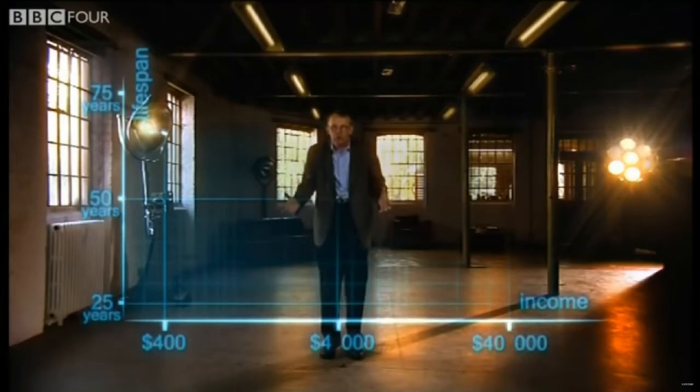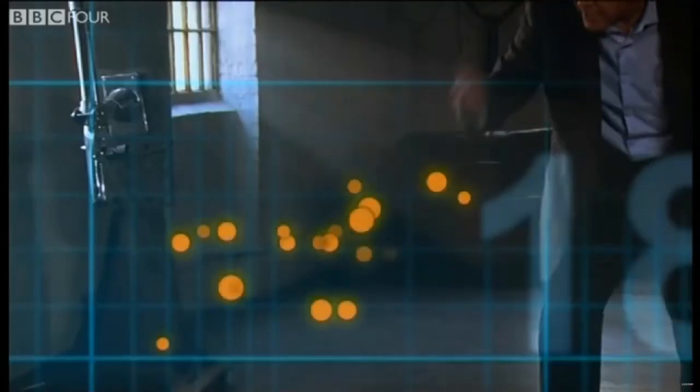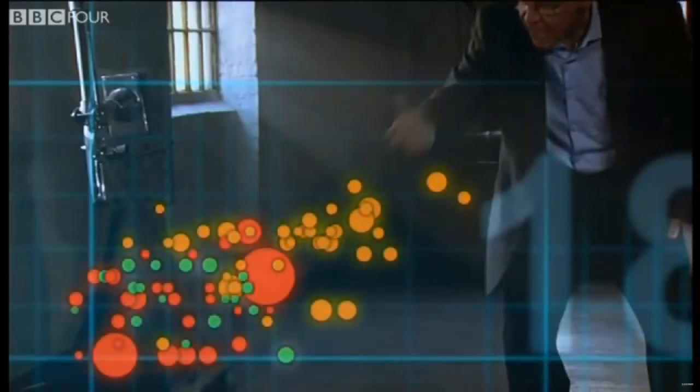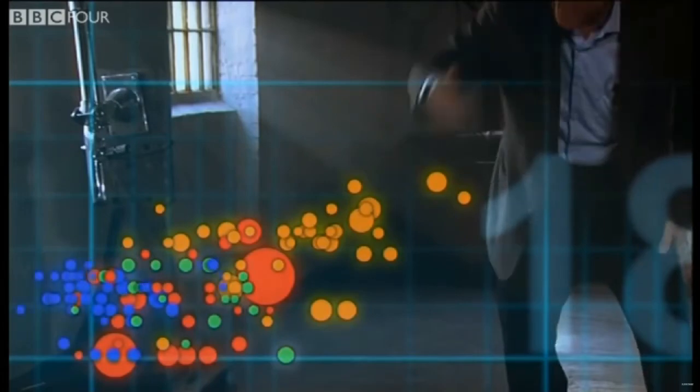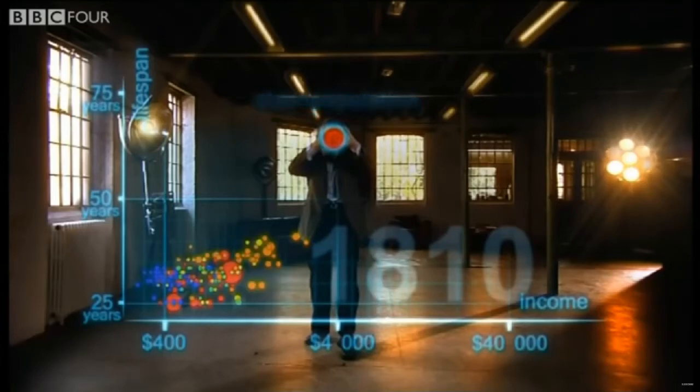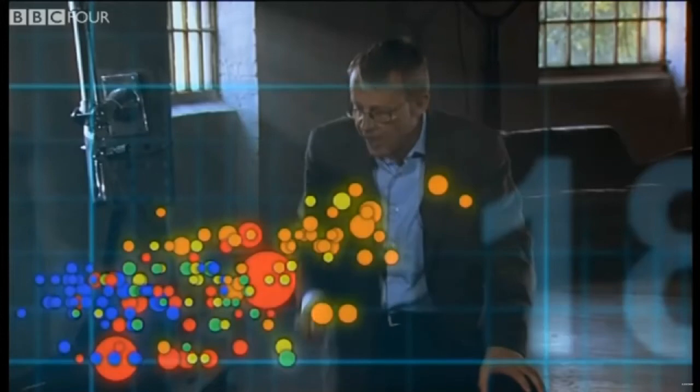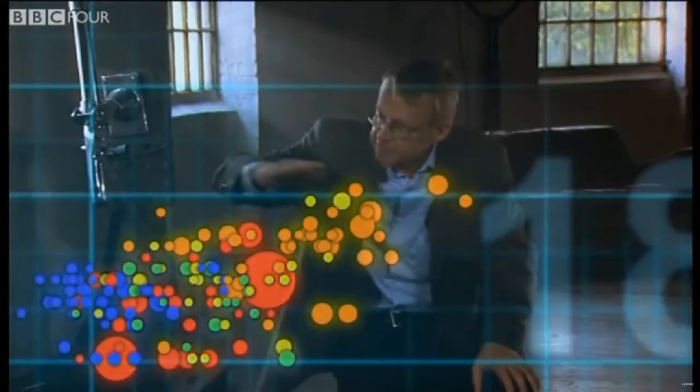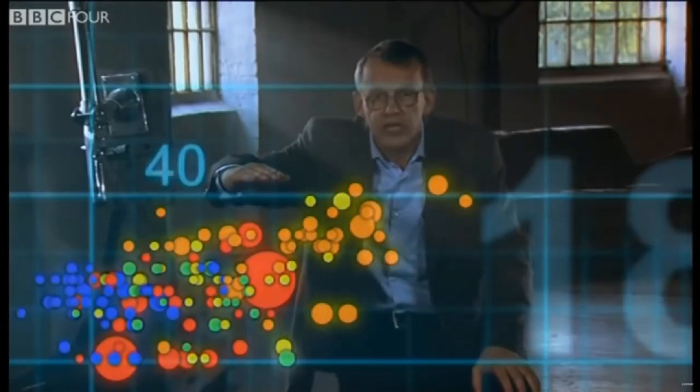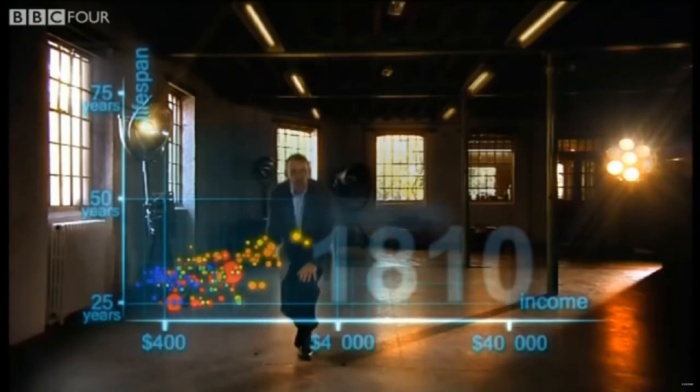Now, I'm going to show you the world 200 years ago in 1810. Here come all the countries. Europe brown, Asia red, Middle East green, Africa south of Sahara blue, and the Americas yellow. The size of the country bubble shows the size of the population. In 1810, it was pretty crowded down there. All countries were sick and poor. Life expectancy was below 40 in all countries. Only the UK and the Netherlands were slightly better off, but not much.